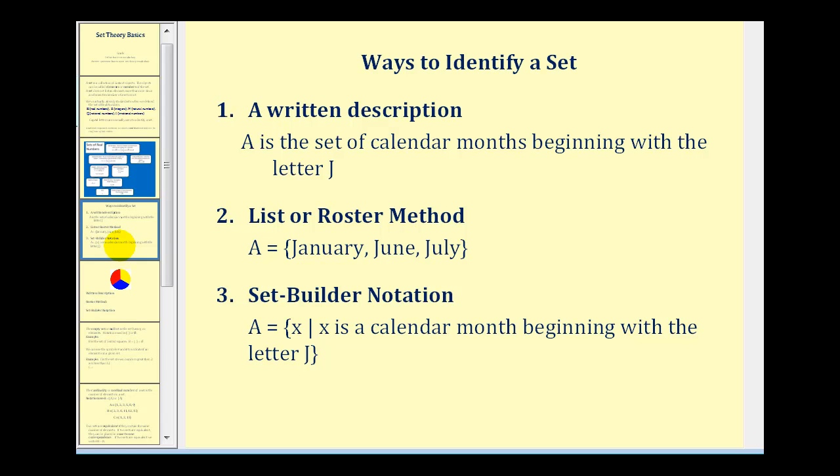The first way is a written description. We could state that set A is the set of calendar months beginning with the letter J. We could also identify set A using the list or roster method where we list the actual members of the set. So set A equals January, June, and July.